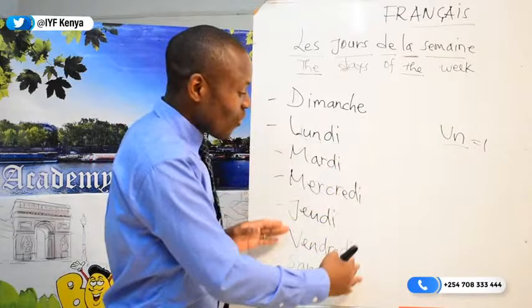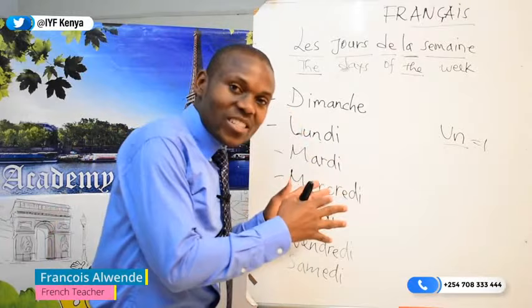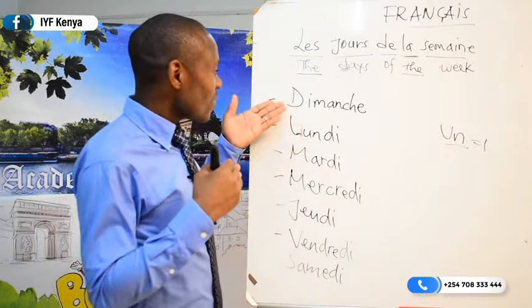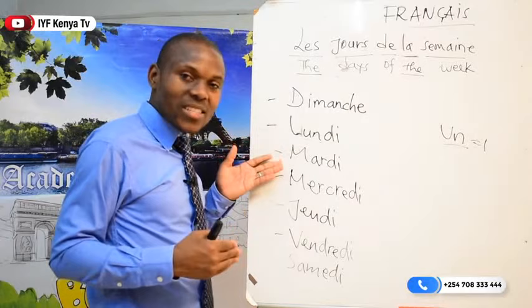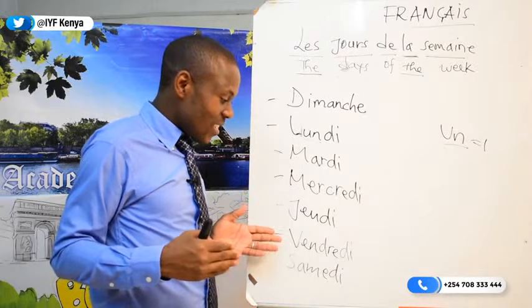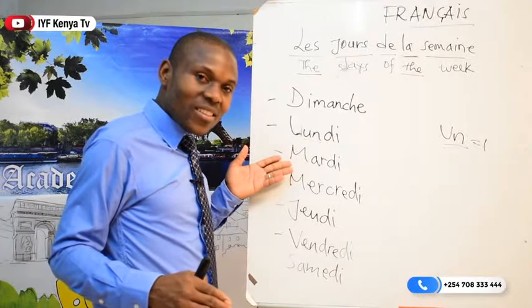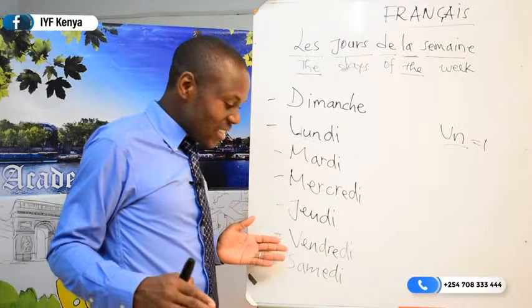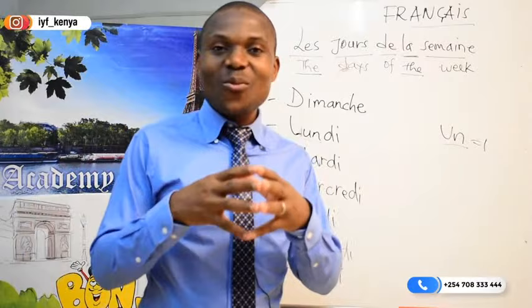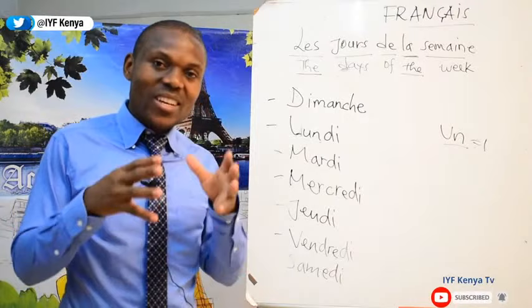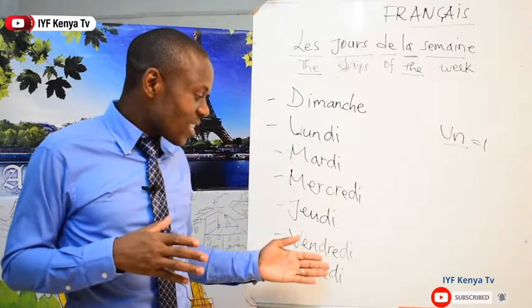The first day of the week in French is 'dimanche,' the second is 'lundi,' and so on. Let's pronounce these days of the week together — you can pronounce after me: dimanche, lundi, mardi, mercredi, jeudi, vendredi, samedi. One more time: dimanche, lundi, mardi, mercredi, jeudi, vendredi, samedi. So today for lesson number seven we talked about the days of the week — dimanche, lundi, mardi, mercredi, jeudi, vendredi, samedi: Sunday, Monday, Tuesday, Wednesday, Thursday, Friday, Saturday.